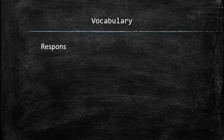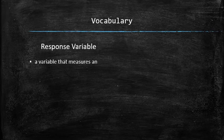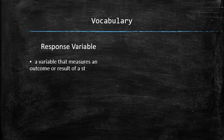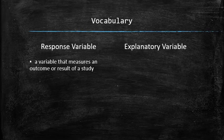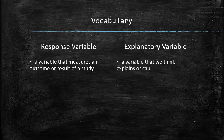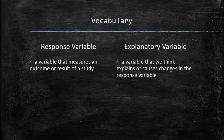Response variable: a variable that measures an outcome or result of a study. Explanatory variable: a variable that we think explains or causes changes in the response variable. In the Salk vaccine experiment, the response variable was whether a child developed polio or not, and the explanatory variable was whether the vaccine was administered or not.